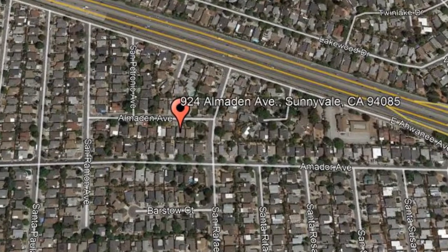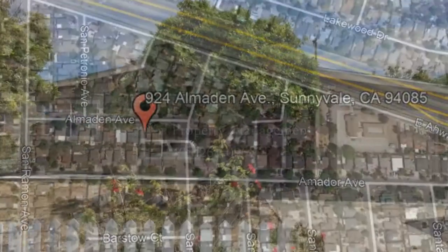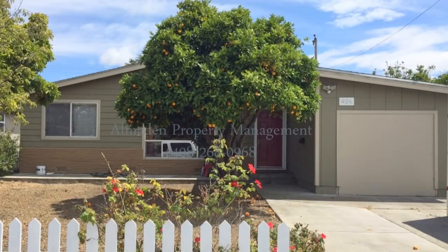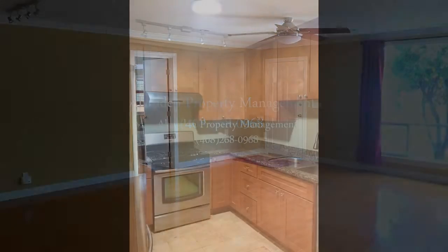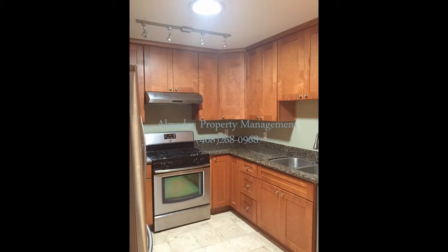924 Almaden Avenue, Sunnyvale, California. This is a lovely 4-bedroom home. It boasts beautiful floors throughout. This home features recessed lighting, dual-pane windows, and ceiling fans.